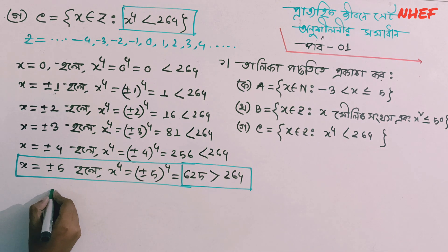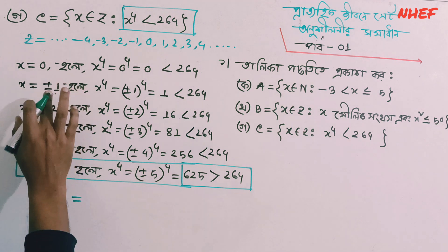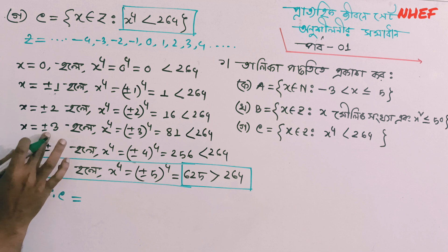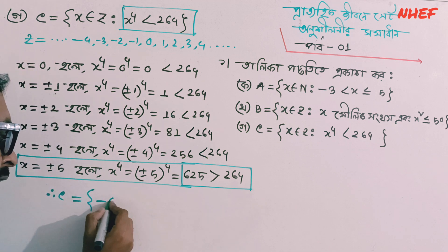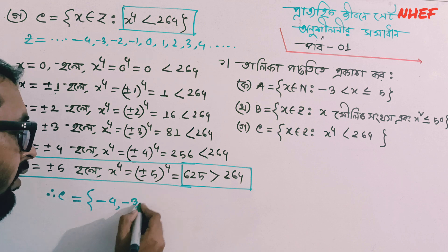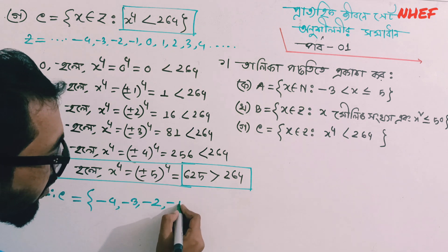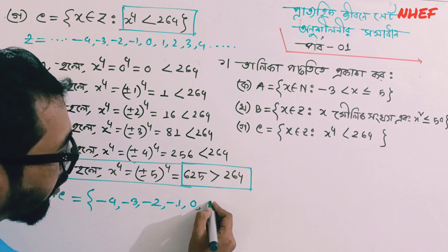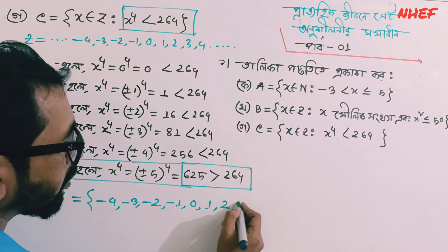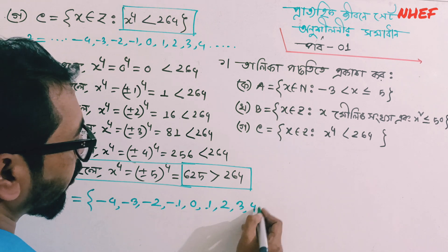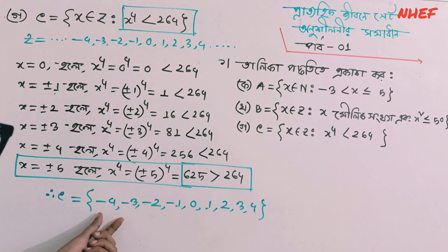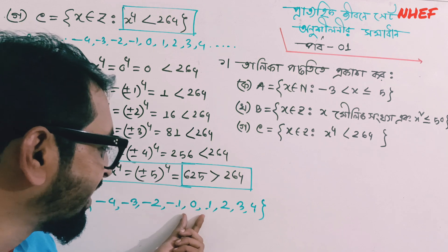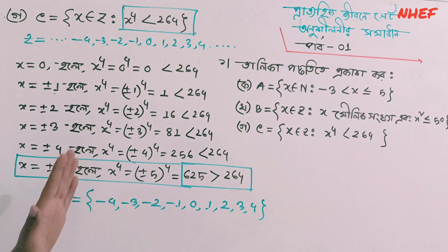So C is equal to: minus 4, minus 3, minus 2, minus 1, 0, 1, 2, 3, 4. So this is minus 4, minus 3, minus 2, minus 1, 0, 1, 2, 3, 4. That is the set C.